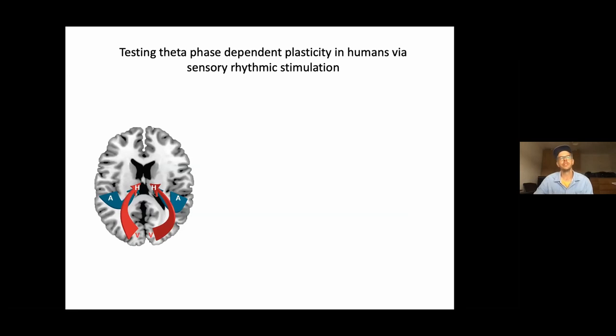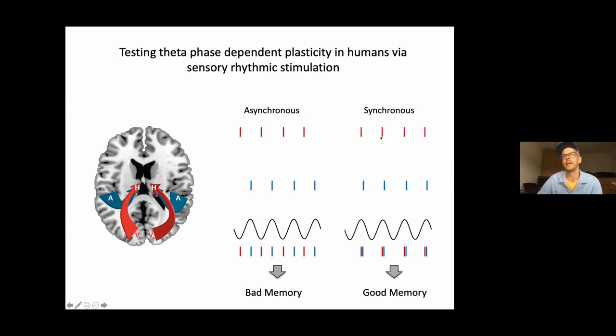And what were we hoping to achieve with this task? We were hoping to achieve that we can synchronize the visual and the auditory regions such that their effect on a downstream region such as the hippocampus would arrive either asynchronously such that they're completely out of phase or synchronously such that they would hit at the same theta phase in the hippocampus. And of course, synchronous presentation should lead to a good memory outcome and asynchronous presentation should lead to a bad memory outcome.